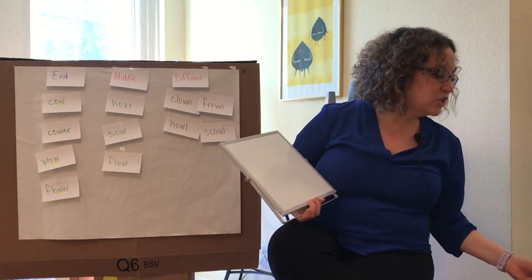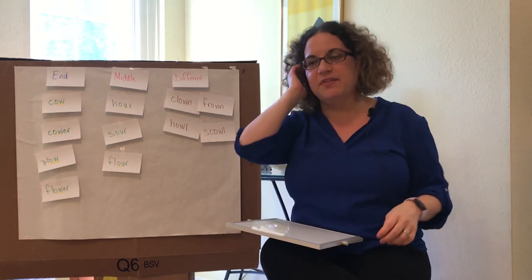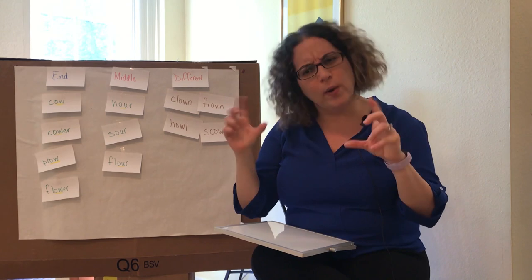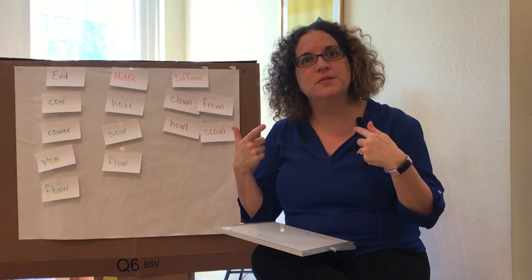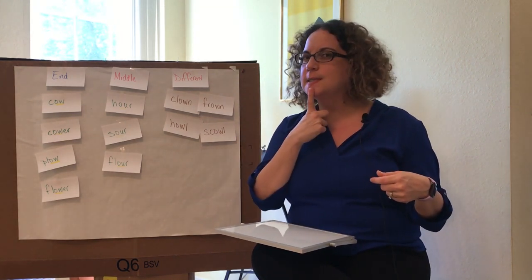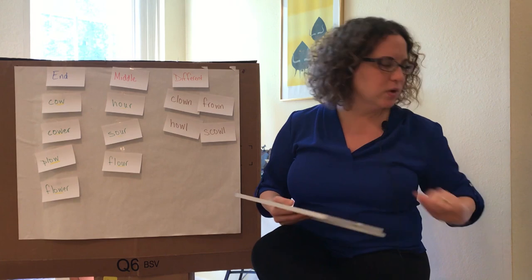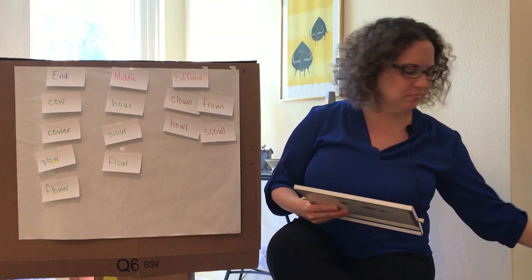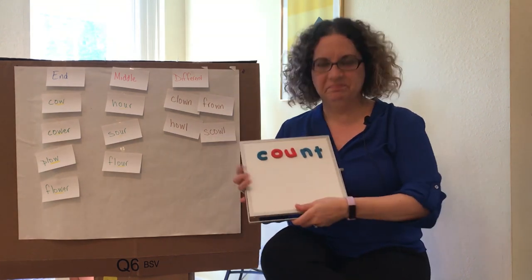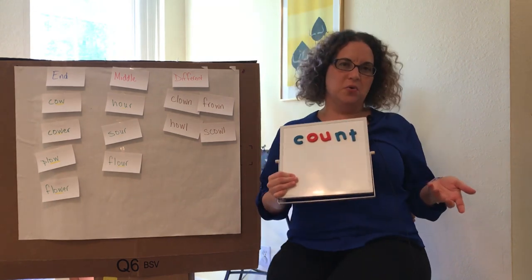Let's start with the word 'count.' I have to count all my money before I go to the store. Say 'count' with me — where do you hear that ow? It's in the middle of the word. So if our ow is in the middle, we're going to use O-U. I'm going to write it on my board — will you try it on the work surface in front of you? Count. Our ow sound is in the middle, so we use O-U. Count. Pretty cool!